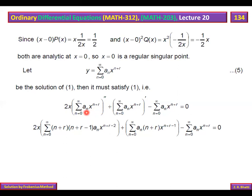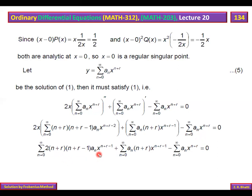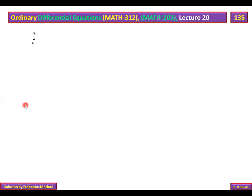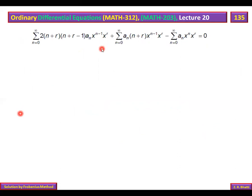After substitution and simplification, the three summations contain powers x^(n+r−1), x^(n+r−1), and x^(n+r) respectively. The strategy is to equate the powers of x across all summations. We can factor out x^r from all three summations since it is independent of n.